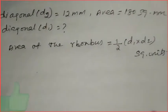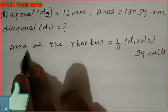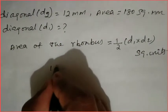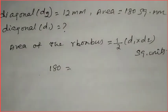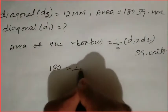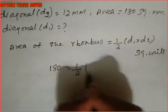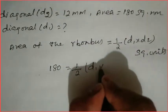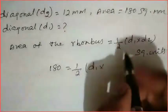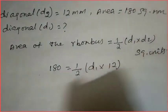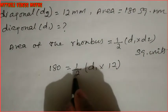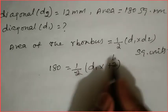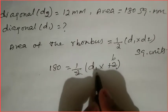Now substitute the values. Area = 180, so 180 = 1/2 × d1 × 12. d1 is what we need to find. Cancelling: 2 cancels with 12 to give 6. So we get 6 × d1 on the right hand side.